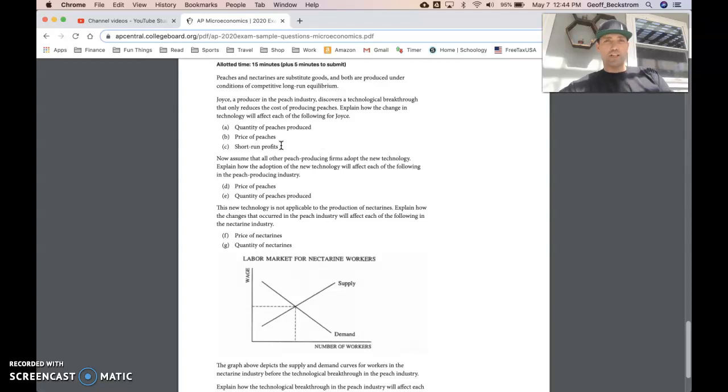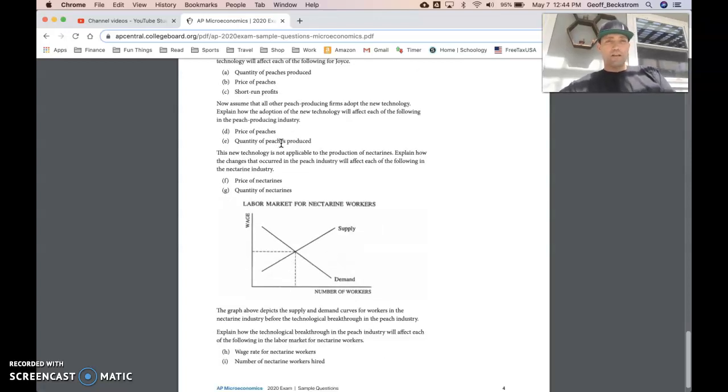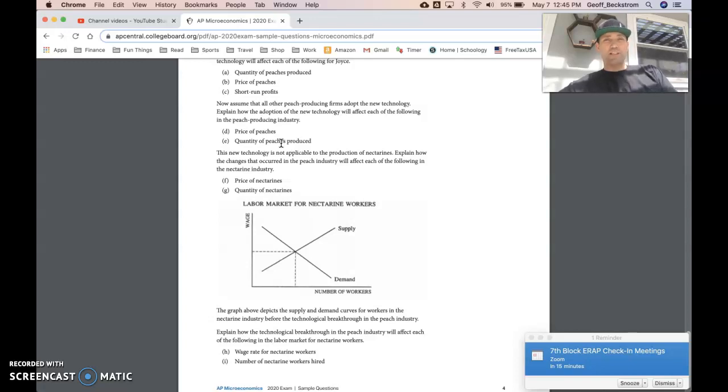Now assume all other peach producing firms eventually discover this same thing. The adoption of this new technology should see the price of peaches come down because this is a new production technology as a determinant of supply as you covered in unit two. So they're throwing another unit in here on this question. Supply should shift to the right, increasing market quantity and decreasing market price. So price goes down, quantity goes up for part D and E.